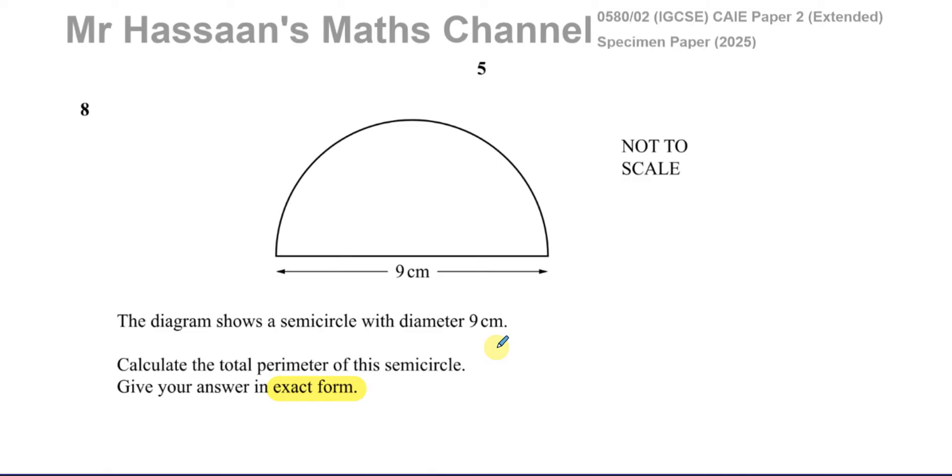So in this question, we're asked to find the total perimeter of the circle. The perimeter of the circle, first of all, means the length of the outline of the circle, that's what perimeter means. So if we consider this, it's basically the length of this curved part, and then you have to add the length of this straight line here.